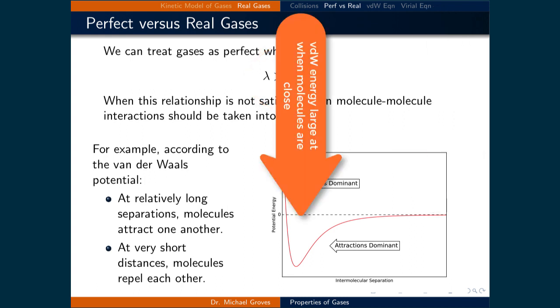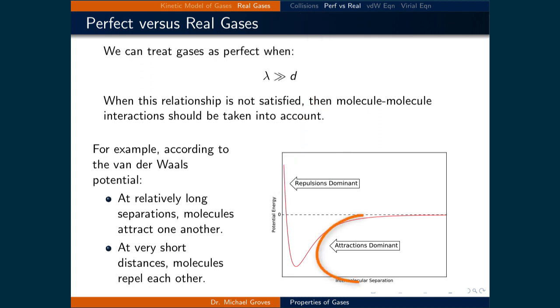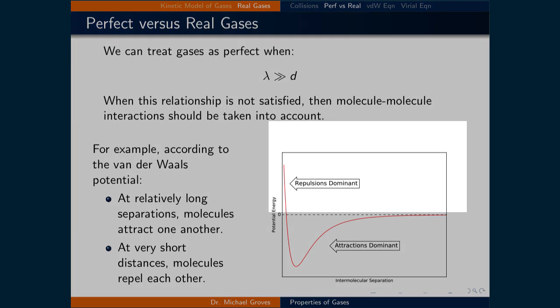When the mean free path is similar to the diameter of the molecule, then these electrostatic forces are much larger and must be taken into account. Van der Waals forces can both be attractive and repulsive. The curve represents a typical van der Waals potential energy diagram based on the intermolecular separation of two molecules. When the curve is above zero, that means that the molecules repel each other, and when the curve is below zero, then the molecules attract each other.